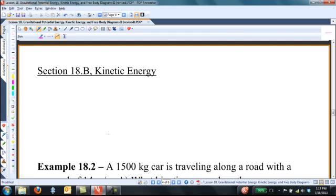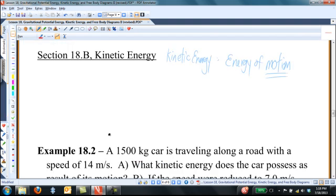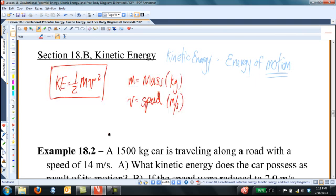Now let's move on to kinetic energy. Kinetic energy is the energy an object has because it is moving. Numerically, the amount of kinetic energy an object possesses depends on two things, namely the object's mass in kilograms and the object's speed in meters per second. The formula for kinetic energy is KE equals one-half mv squared, and the units for kinetic energy are the same as the units for potential energy, which is to say joules.